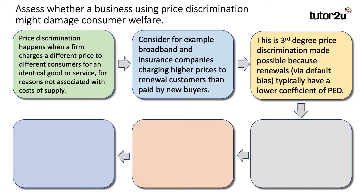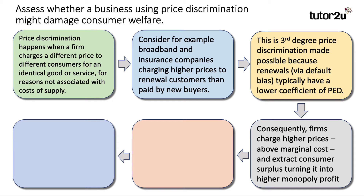Now this is third degree price discrimination — good knowledge — made possible because renewals, people who are, for example, renewing their car insurance, may have a default bias. They don't look around for a better deal, so they typically have a lower coefficient of elasticity of demand. Consequently, firms charge higher prices above marginal cost, extract consumer surplus, turning it into higher monopoly profit. Nice analysis there: price above marginal cost, extracting consumer surplus, converting it into monopoly profit.